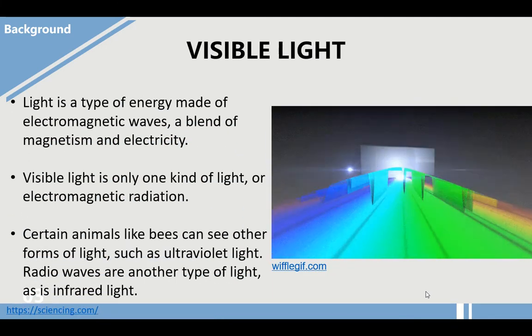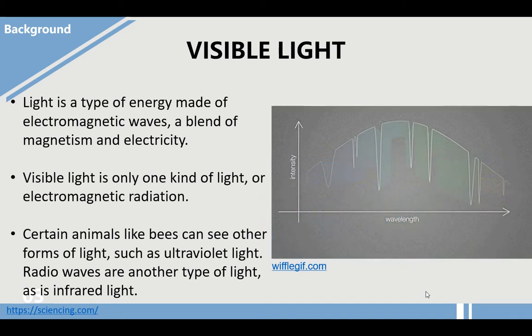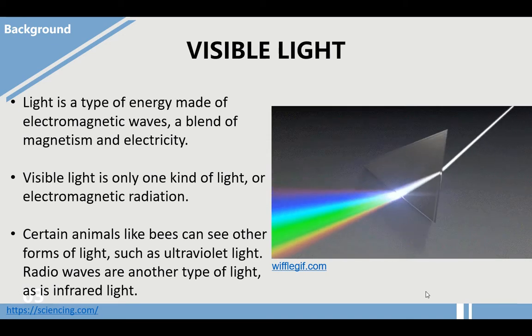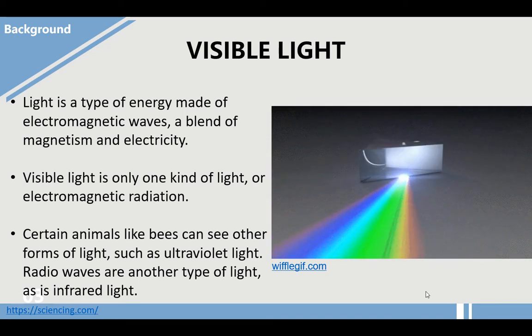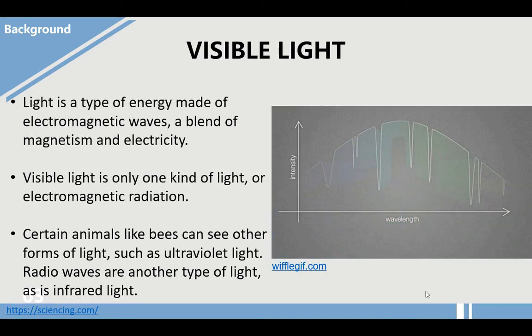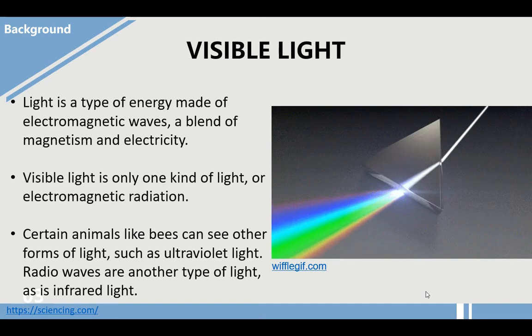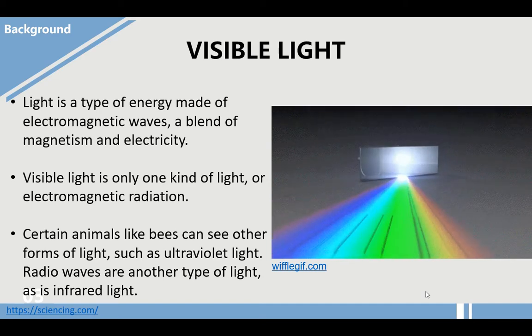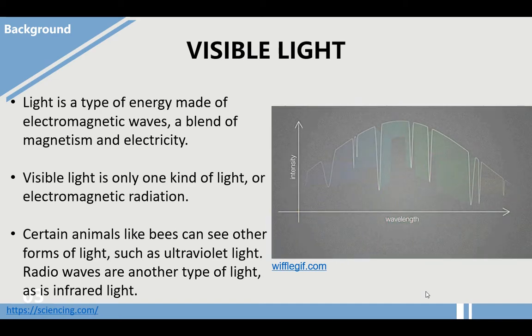Light is a type of energy made of electromagnetic waves, a blend of magnetism and electricity. Visible light is only one kind of light or electromagnetic radiation. Certain animals like bees can see other forms of light such as ultraviolet light. Radio waves are another type of light, as is infrared light.